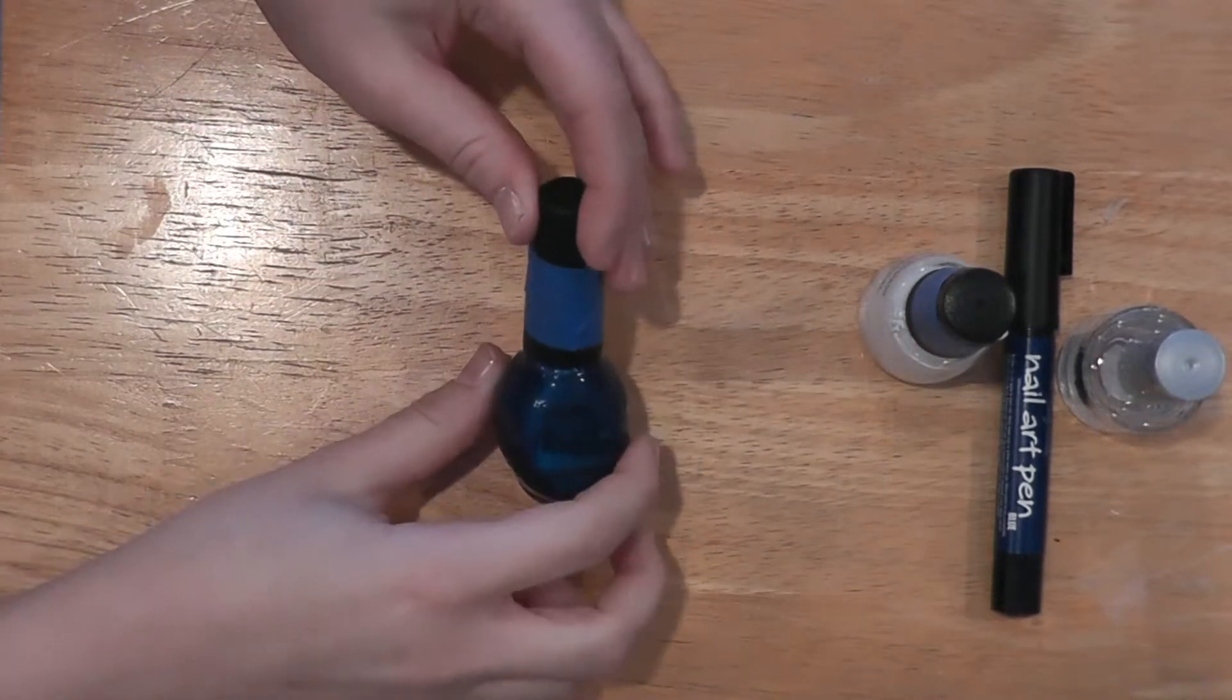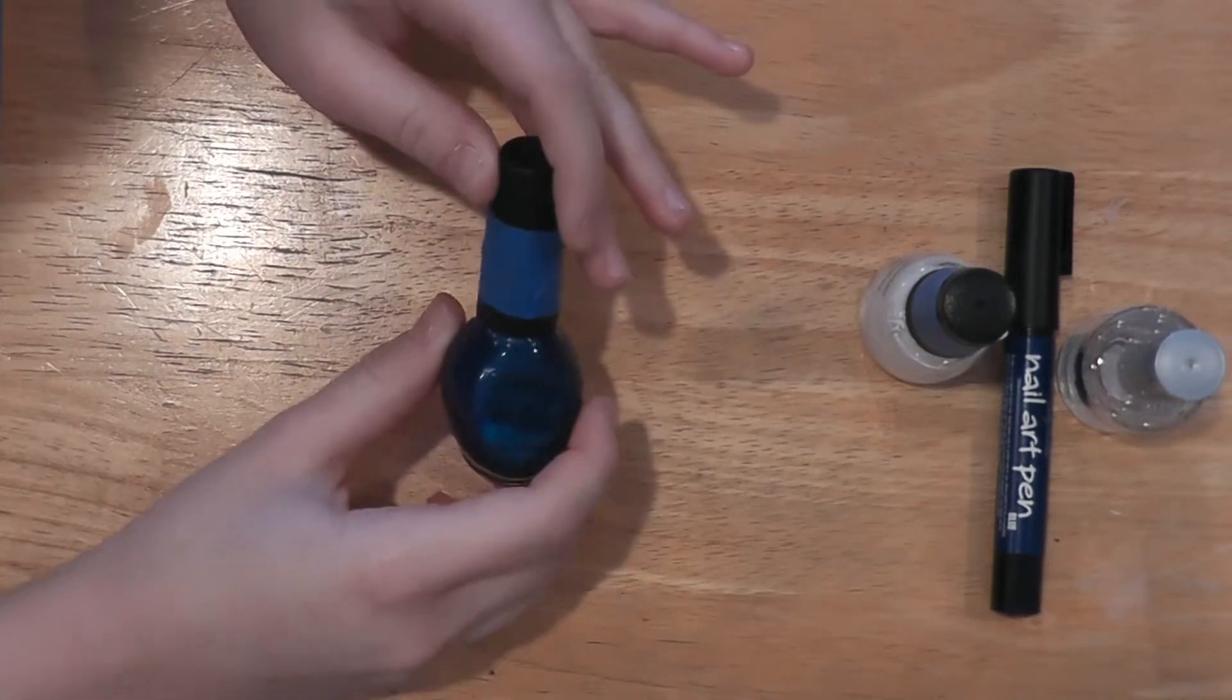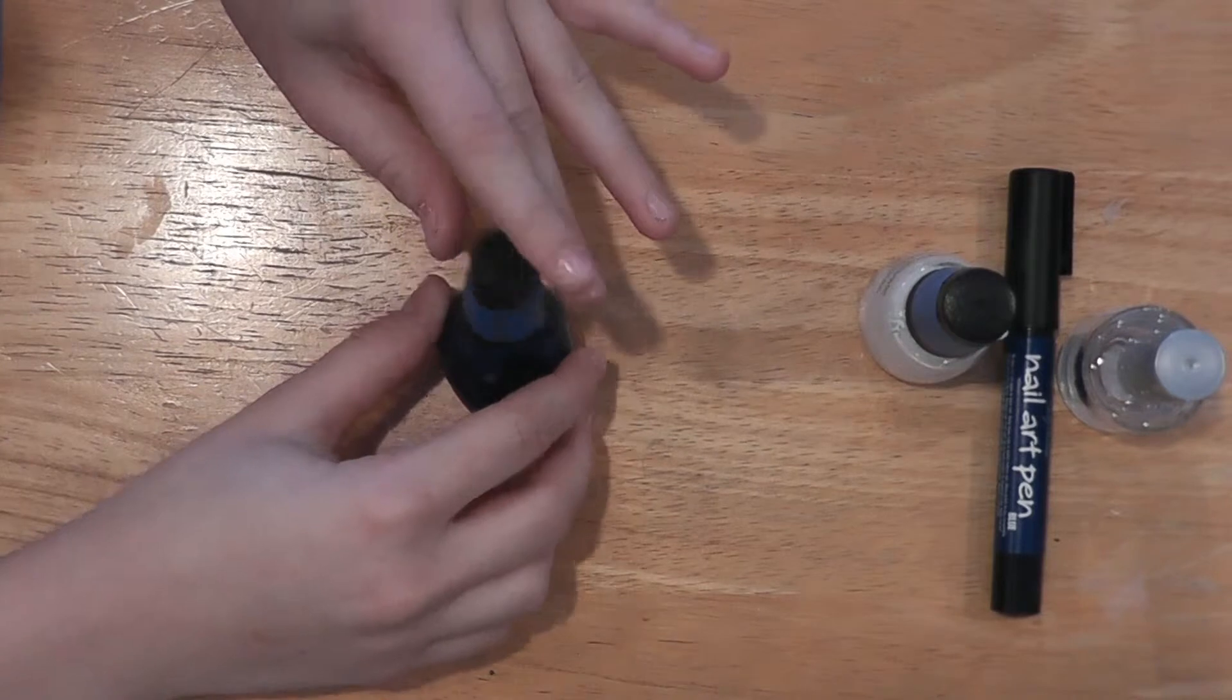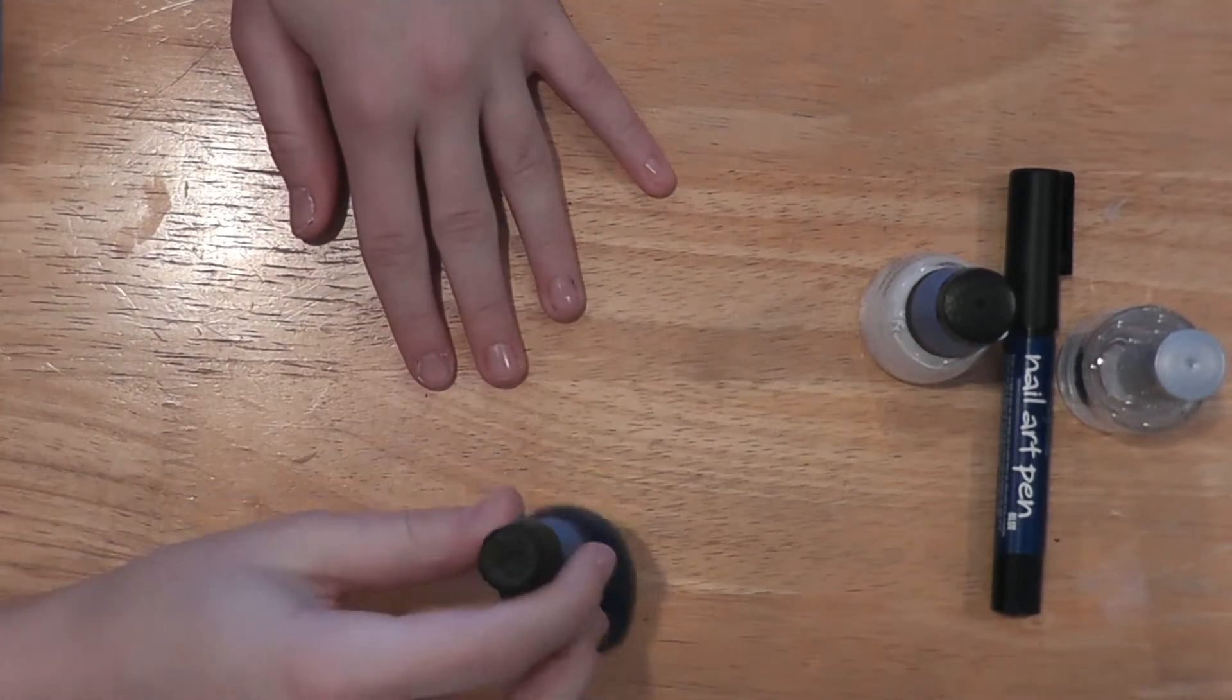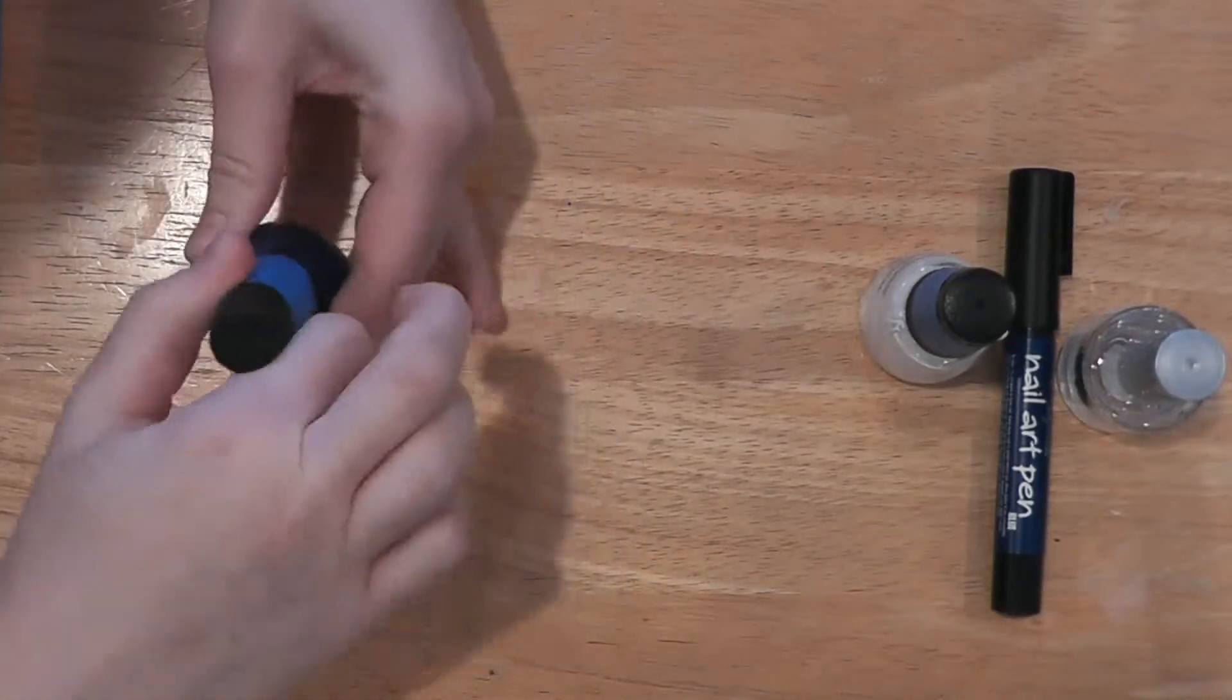Next you're going to take your blue and paint it on whatever nails you do not want the snowflake painted on. I'm going to paint the snowflake on my ring finger, so I'm just going to paint the blue on every finger except for that one.